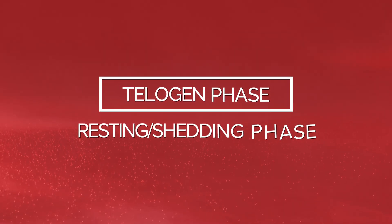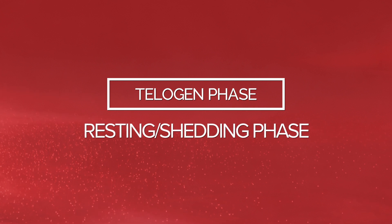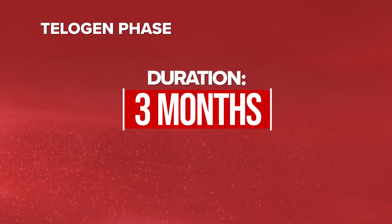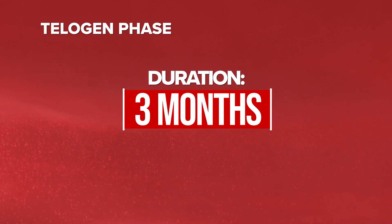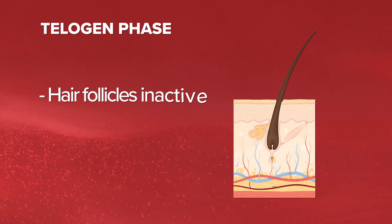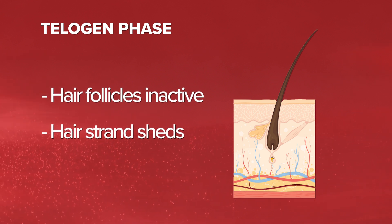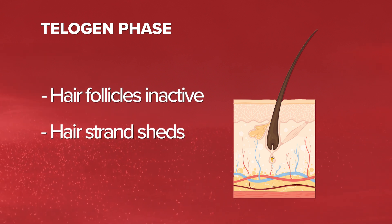Finally, we have the telogen phase, the resting or shedding phase. This phase typically lasts for around three months. The hair follicle is inactive and the hair strand is ready to shed and make way for new hair growth.